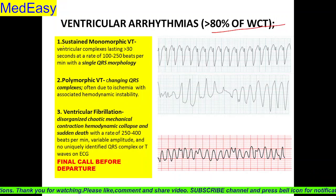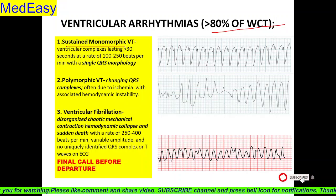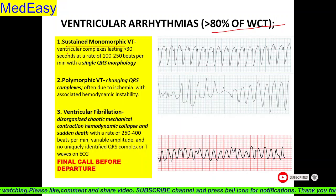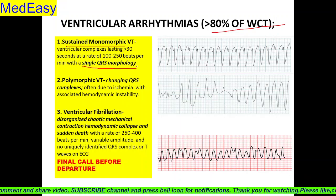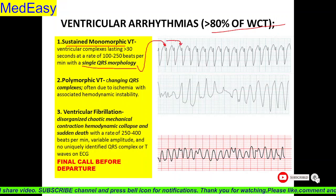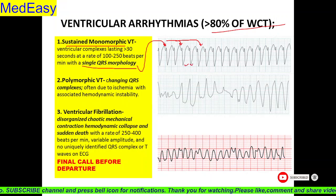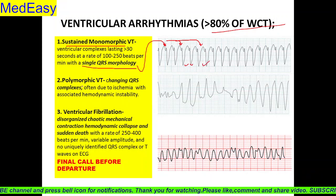Types are: number one, sustained monomorphic ventricular tachycardia. Yeh kya hain? There are ventricular complexes lasting more than 30 seconds at a rate of 100 to 250 beats per minute with a single QRS morphology. Here we can see all QRS are looking similar. This is typical of monomorphic ventricular tachycardia.